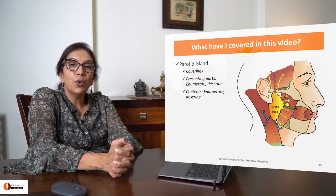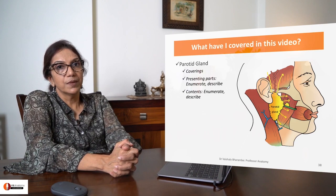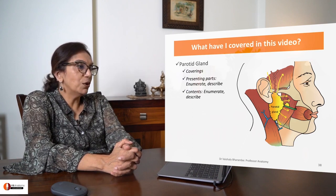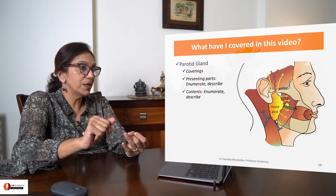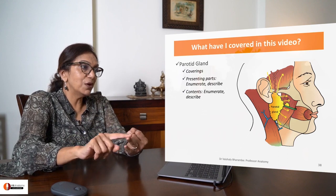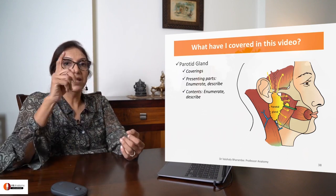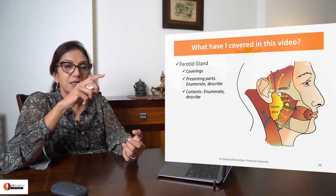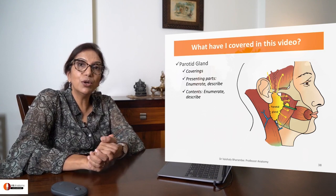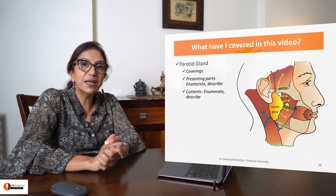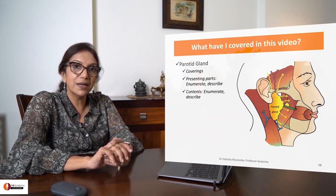What have we covered up till now? We have covered the coverings — remember, true and false capsule. Then we covered the parts: apex, base, three surfaces, three borders. Then we talked about the contents and enumerated each of them.